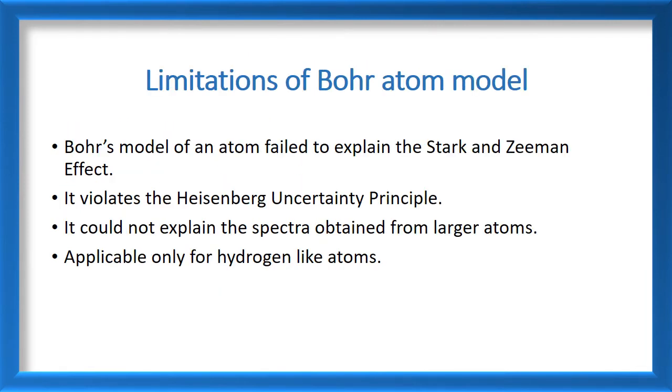Even though the Bohr atom model was a successful model in explaining hydrogen and hydrogen-like systems, it has its own failures. The Bohr atom model failed to explain the Stark effect and the Zeeman effect. The Stark effect is the effect when the spectral lines split in the presence of the magnetic field. The another limitation was, the Bohr atom model violated the Heisenberg's uncertainty principle. According to Heisenberg's uncertainty principle, you cannot measure position and momentum accurately in simultaneity. But in Bohr atom model, we have already seen that the angular momentum is well defined for a shell and the position of the shell is also well known. So, this violates the Heisenberg's uncertainty principle.